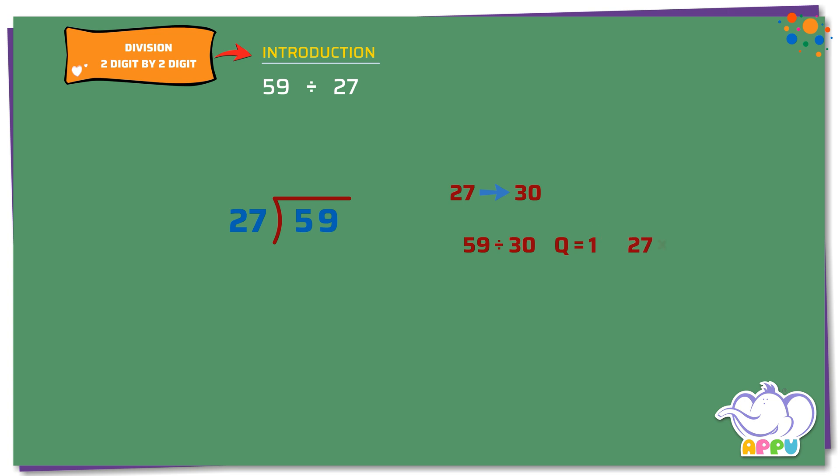We multiply 27 times 1 equals 27, which looks much less than 59. We try the next number 2. We multiply 27 times 2 equals 54, which is just less than 59. So, it takes 2 27s.